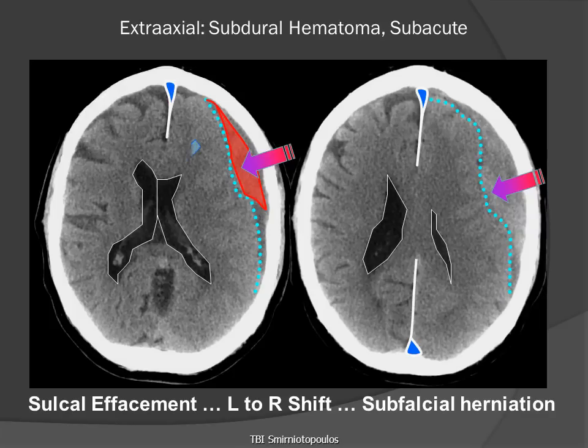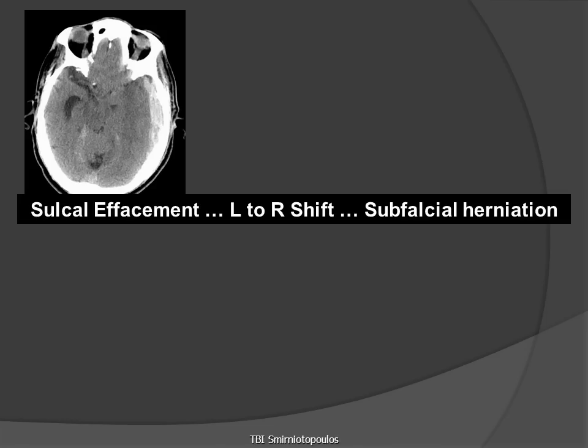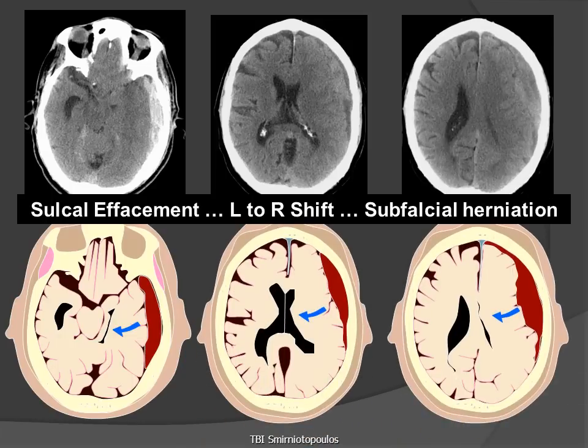When we have subfalcial herniation, the anterior portion of the lateral ventricle and the posterior portion of the lateral ventricle must move medially to pass through the central opening in the falx cerebri. Looking diagrammatically at three sections from the same patient, we can see how: number one, the sulci are effaced; number two, there is a nearly isoattenuating extra-axial collection, except in the lowest section in the middle cranial fossa; and three, there is midline subfalcial herniation.